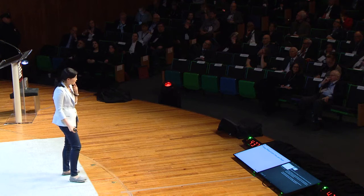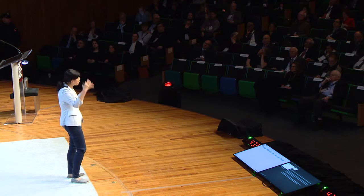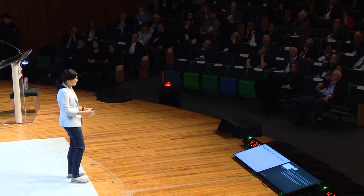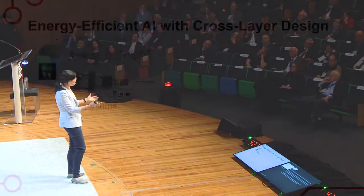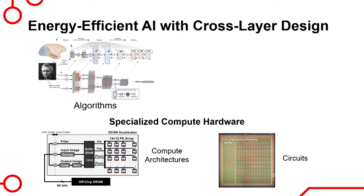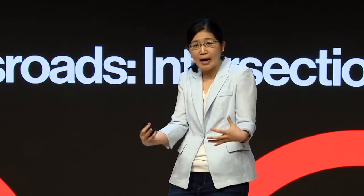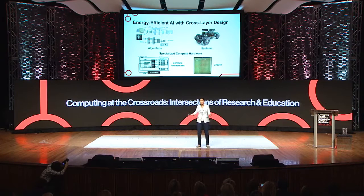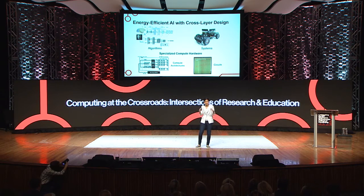In our group, we've primarily been looking at how to deliver energy-efficient AI through cross-layer design, all the way across the stack. First, we want to develop new algorithms that are energy-efficient — thinking about energy consumption in addition to accuracy, and how algorithms might map onto hardware. Second, we need to build more specialized hardware, redesigning computers from the ground up targeting AI, which means new compute architectures and new circuits. And finally, it's important to think about how this compute hardware is integrated into an actual system, including sensing or actuation for robotics, for a holistic solution to reducing energy consumption.